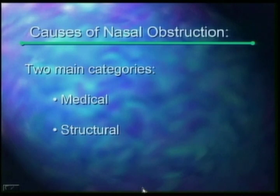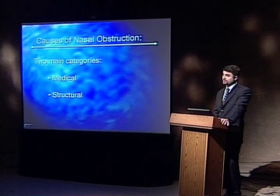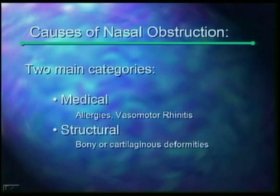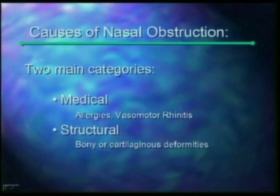These are the medically treatable causes of nasal obstruction and the structural causes of nasal obstruction, which are generally treated with surgical means. The medically treatable causes include allergic nasal disease, vasomotor rhinitis, and environmental issues such as smoking or toxins. These are things that surgery cannot correct, and this is something that's important to evaluate in your patients prior to treatment. The structural issues are those which are basically due to problems with the anatomy of the nose, and this is the focus of my talk today.